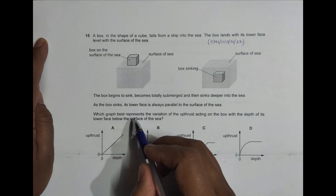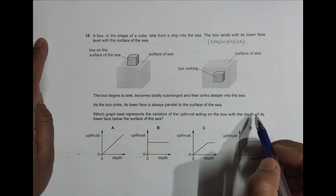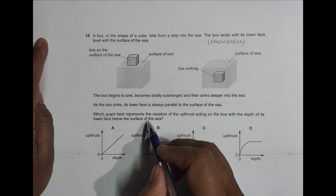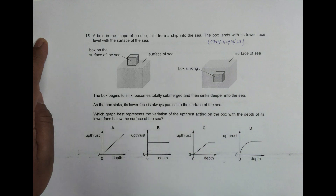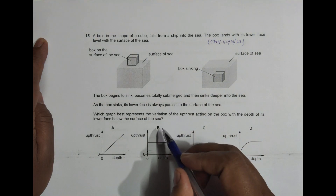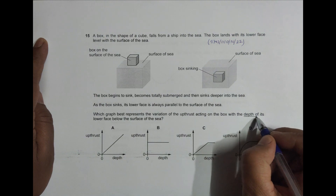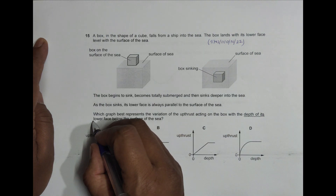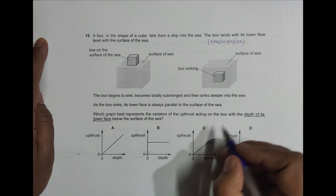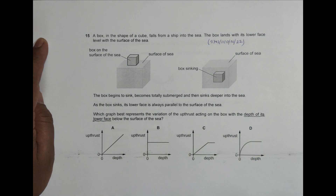Which graph best represents the variation of the upthrust acting on the box with the depth of its lower face below the surface of the sea? We need to see the graph of upthrust versus the depth of the lower face — that means the depth of the immersed portion.